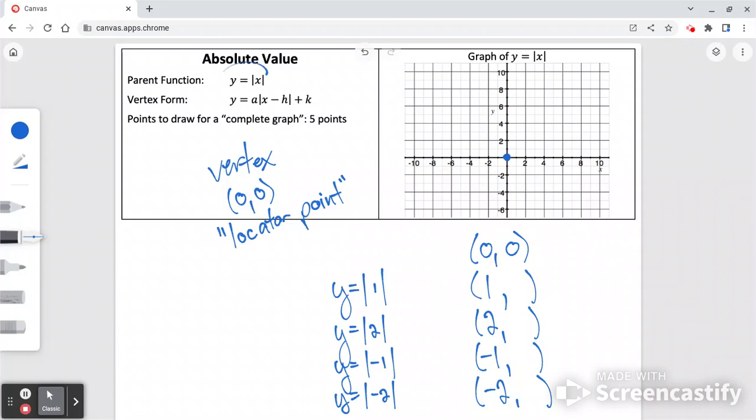Okay, here is our equation with these x values plugged in. So let's think about what they all are. The absolute value of 1 is 1. The absolute value of 2 is 2. The absolute value of negative 1 would be positive 1. And then of negative 2 would be positive 2.